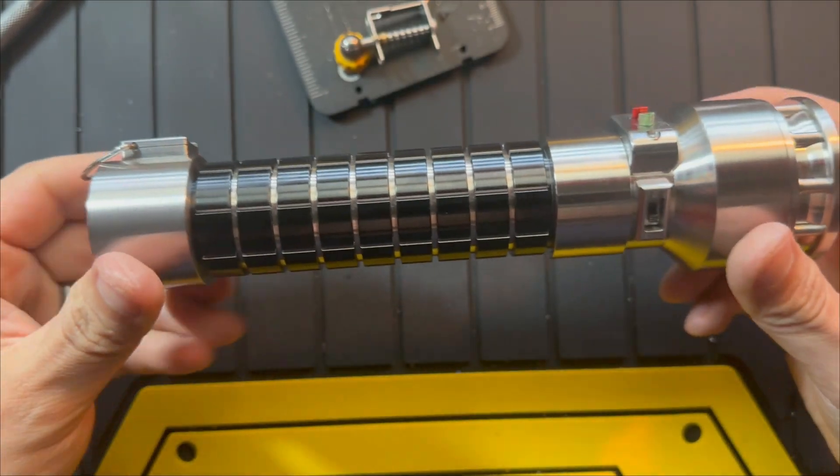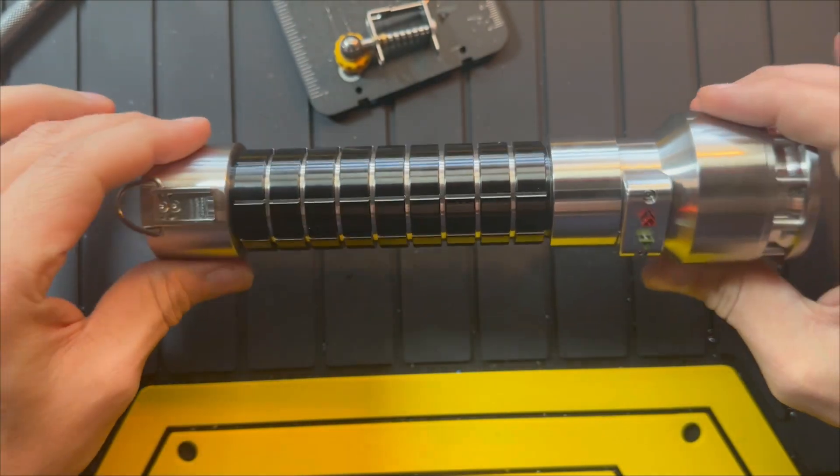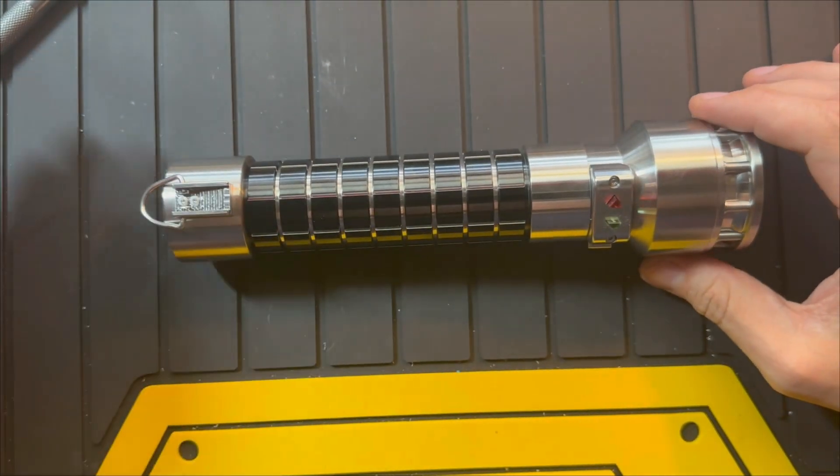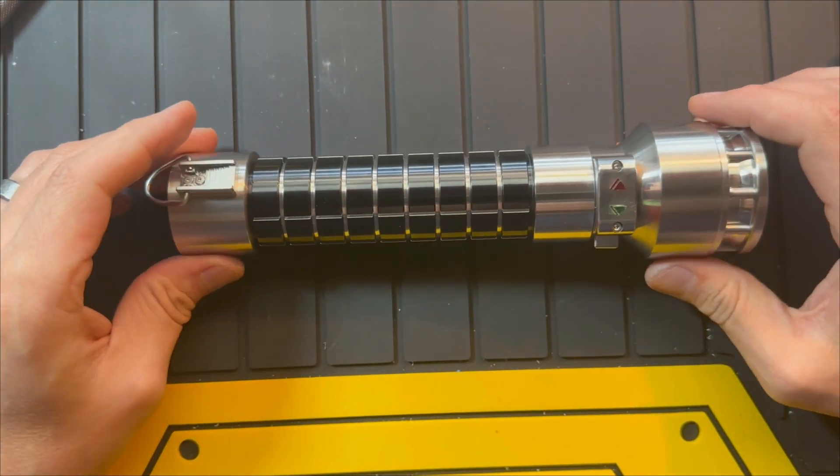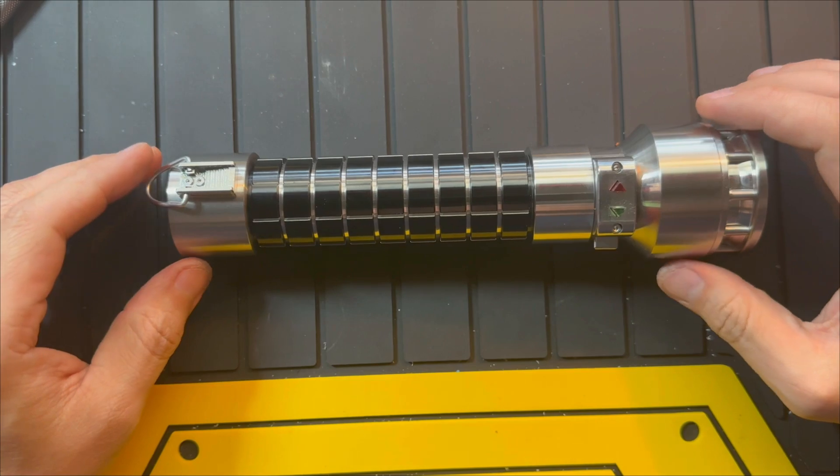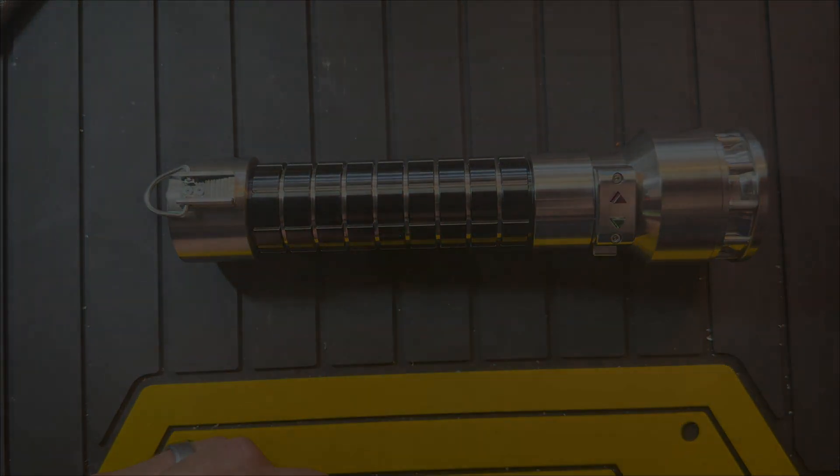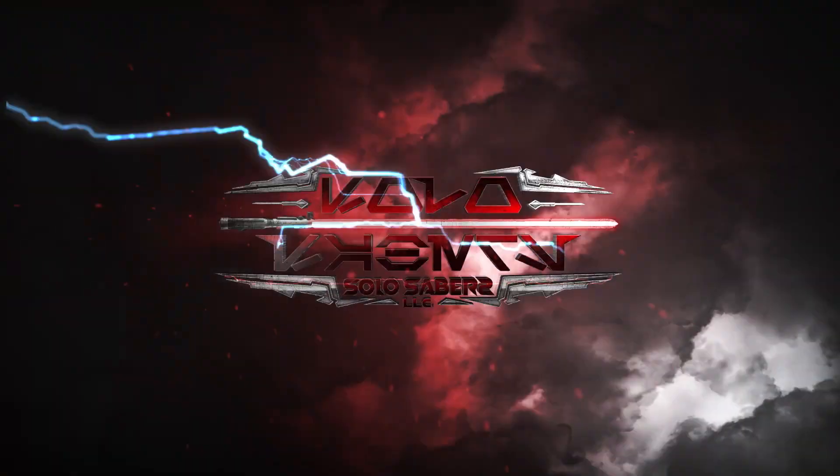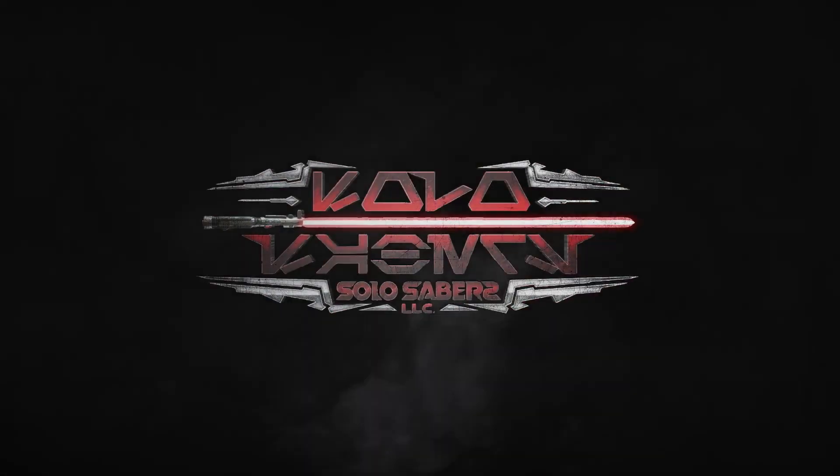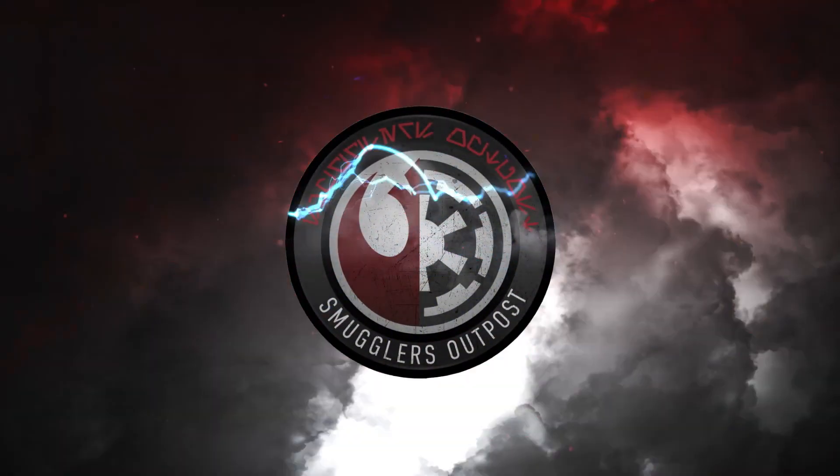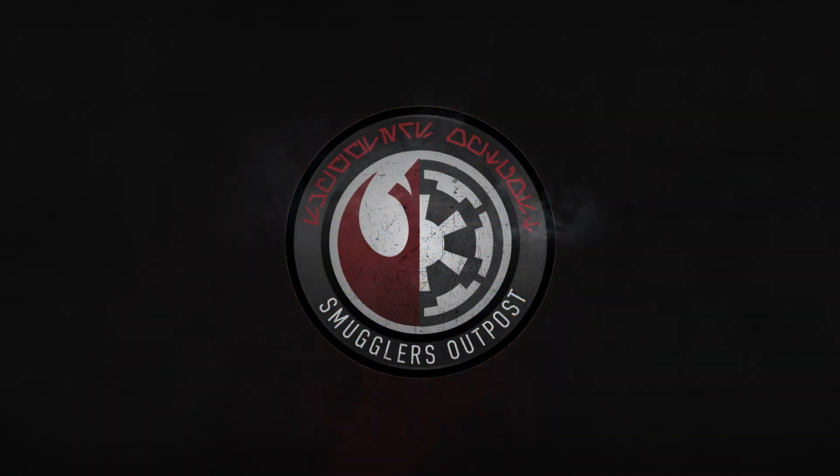And there we have it, the Corkrus by my dude Benji over at Nerfherder Customs and manufactured by my dude Leon over at Java's Junkyard. A very, very nice hilt.